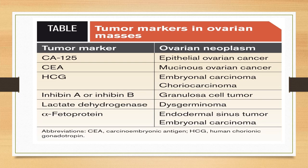Tumour markers for ovarian masses: CA125 is raised in epithelial ovarian cancer — used for diagnosis and follow-up. CEA and CA19-9 are for mucinous ovarian cancer. β-hCG and chorionic gonadotropin for embryonal carcinoma or choriocarcinoma. Inhibin A or B for granulosa cell tumors — which also release estrogen, causing precocious puberty, postmenopausal bleeding, or irregular ovulatory bleeding. LDH is a tumour marker for dysgerminoma. Alpha-fetoprotein is released by endodermal sinus tumors or embryonal carcinoma; immature teratomas and embryonal carcinoma can be mixed-type germ cell tumors.